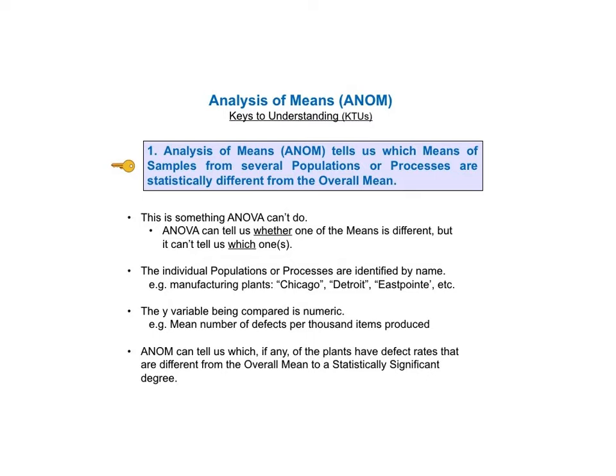ANOM compares the means of samples from several populations or processes — for example, samples taken from different manufacturing plants such as the Chicago plant, the Detroit plant, and the East Point plant. The comparison is among the values of a numerical variable Y, for example, comparing the mean number of defects per thousand items produced in each plant. ANOM can tell us which, if any, of the plants have defect rates that are significantly different from the overall mean.